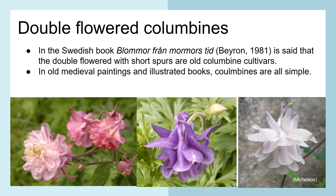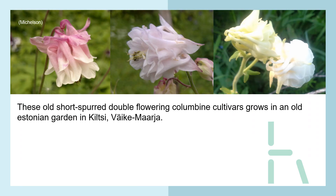Double-flowered Columbines. In the Swedish book Blommor från Mormors Stuga, it is said that the double-flowered with short spurs are old Columbine cultivars. In old medieval paintings and illustration books, Columbines are all simple. Here are more slides with these old short-spurred double-flowering Columbines.